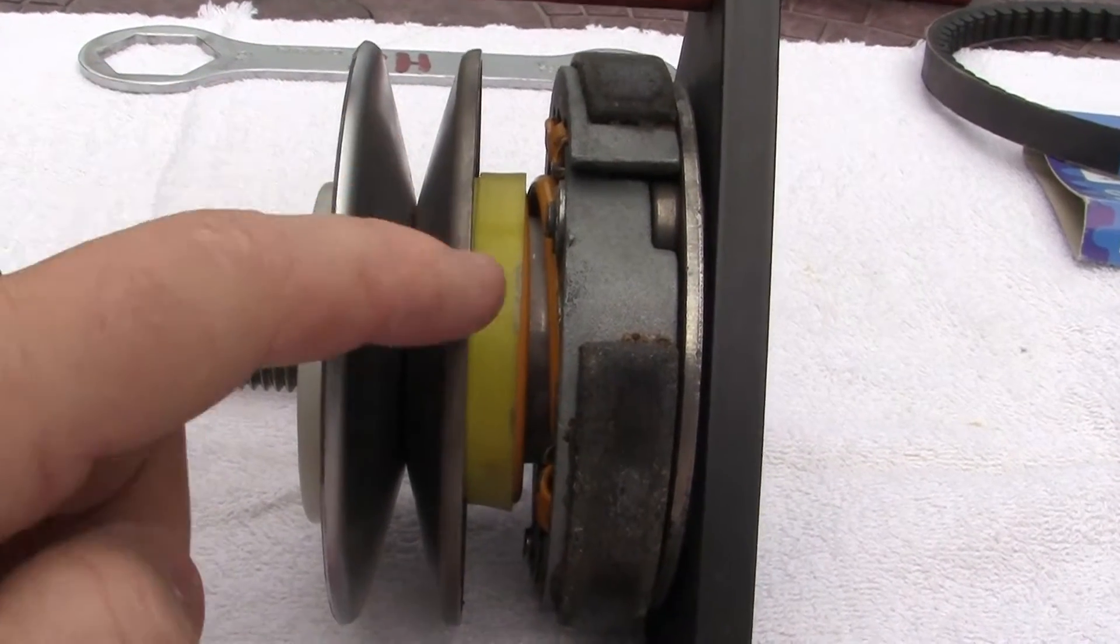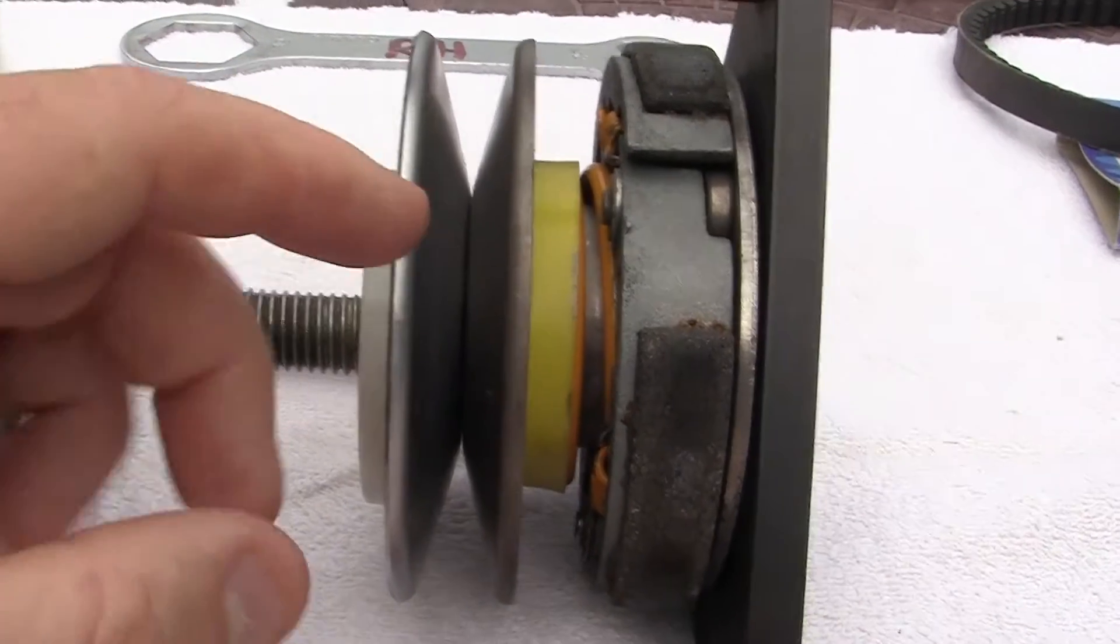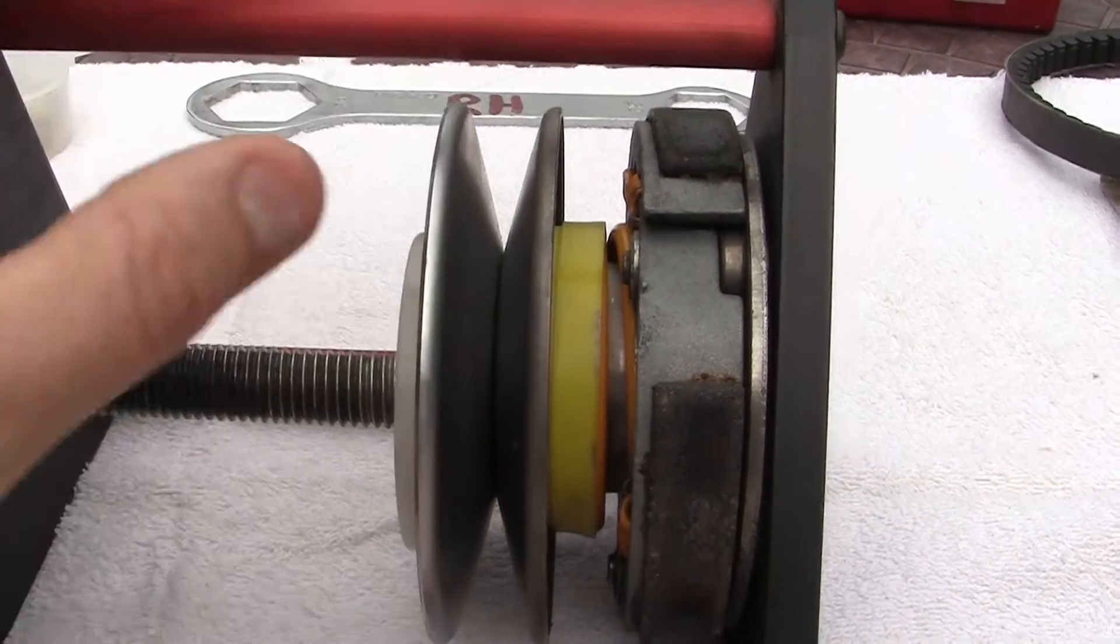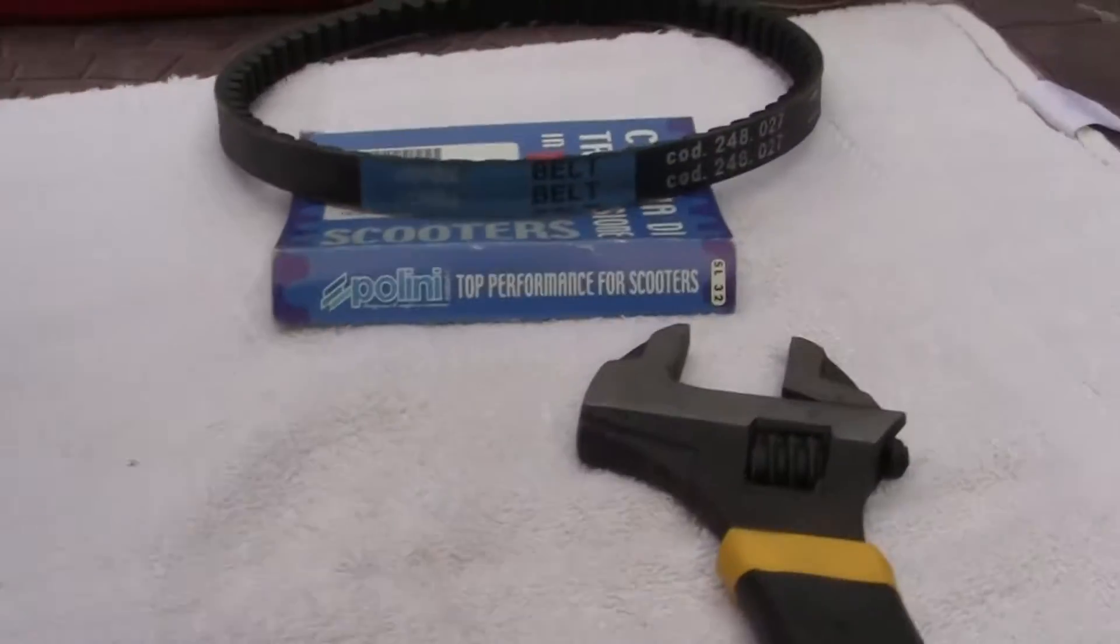It controls this clamshell pulley. So the pulley is clamshell because it opens and closes like a clam, under pressure with the belt.